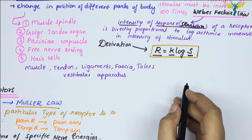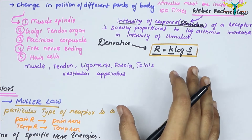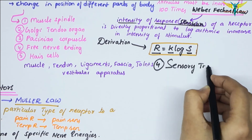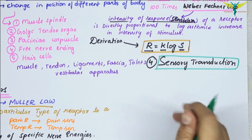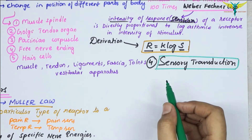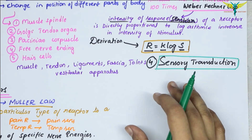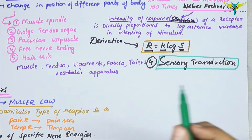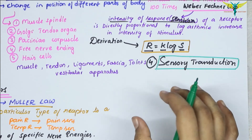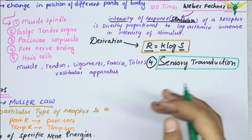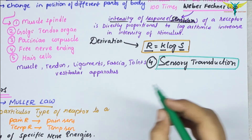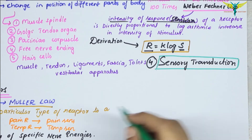The next property is sensory transduction. Sensory transduction in a receptor is a process by which the energy in the environment is converted into electrical impulses in the nerve fiber.